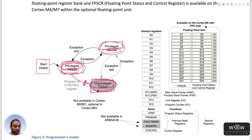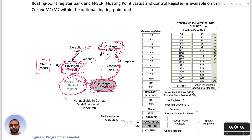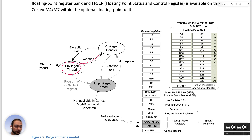Once the CPU is in unprivileged thread mode, the only way to return to privileged thread mode is to issue a software exception, then toggle the bits within the control register to come back. The unprivileged thread mode is for application code — you want to safeguard the control register from the application, which is why unprivileged thread mode exists.